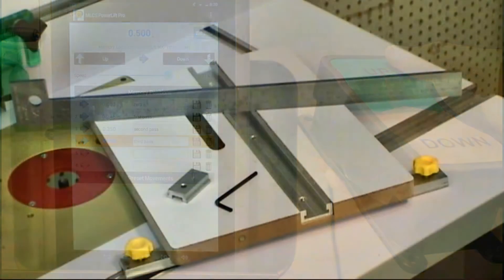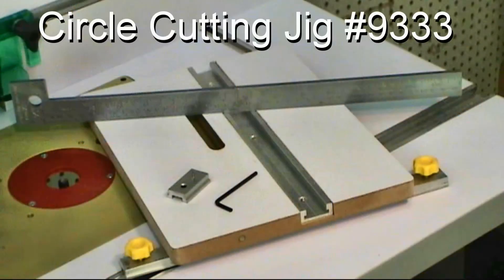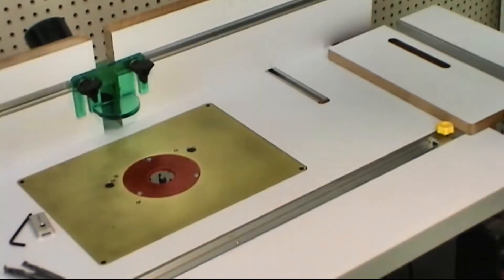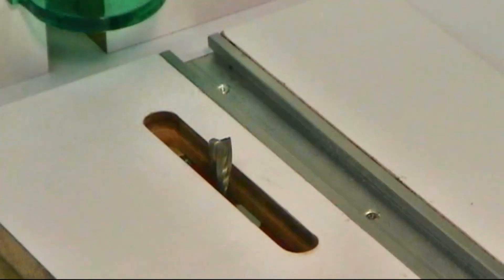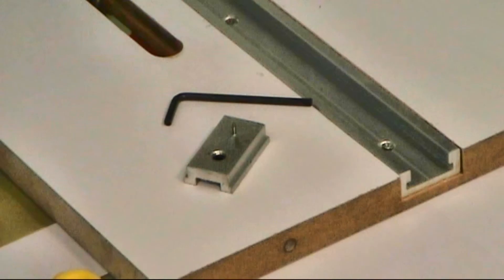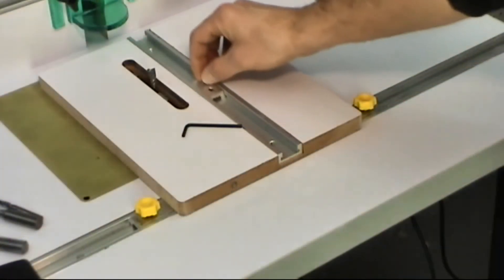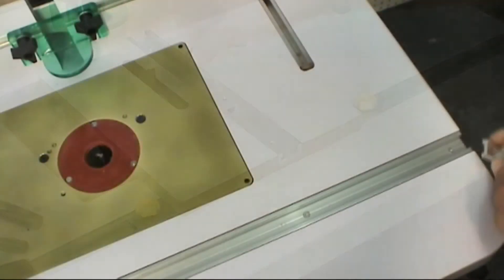For the pivot point, we'll be using the MLCS circle jig number 9333. This jig slips into the T-Track style miter track and positions over the bit. There's a pivot point that can be used in the jig for small circles, or directly in the miter track for larger circles.